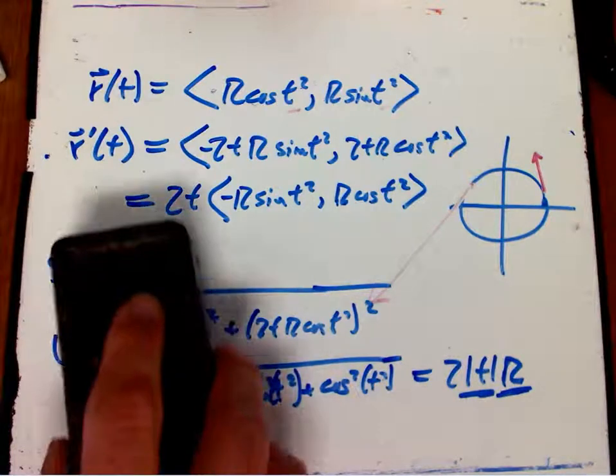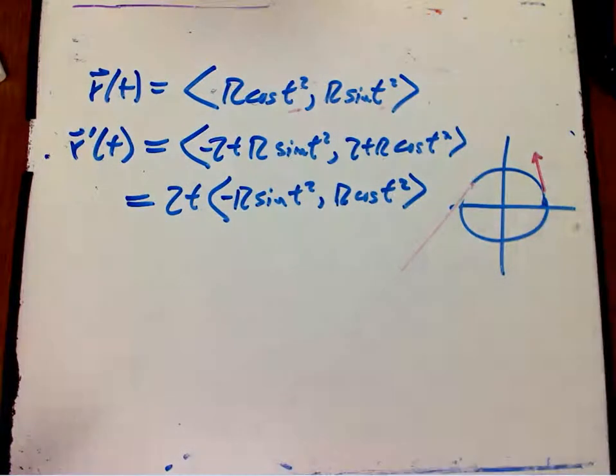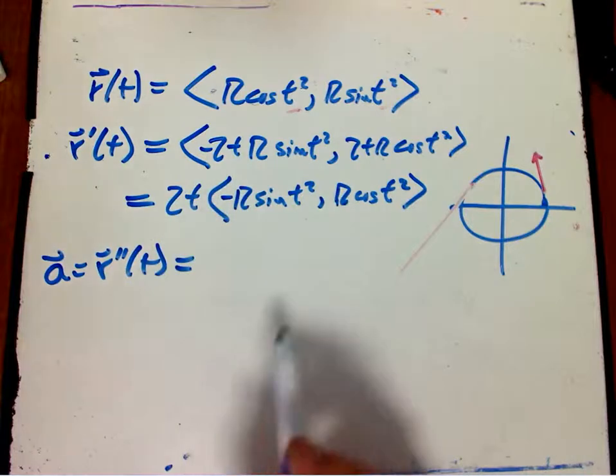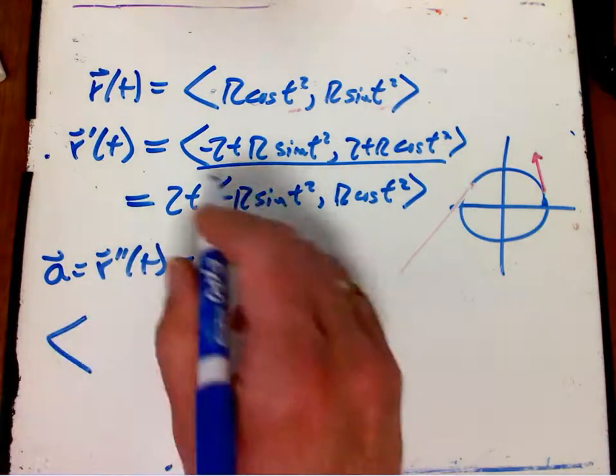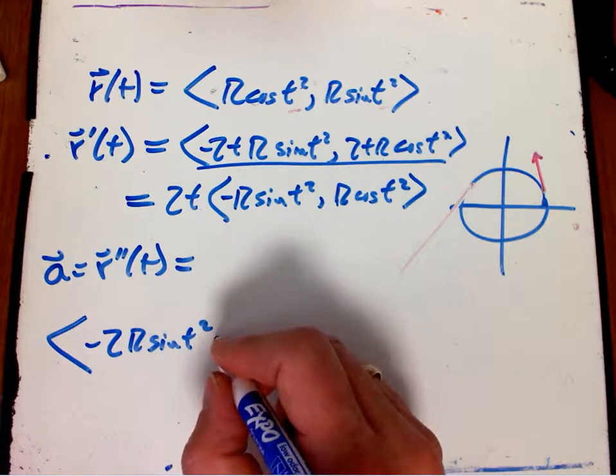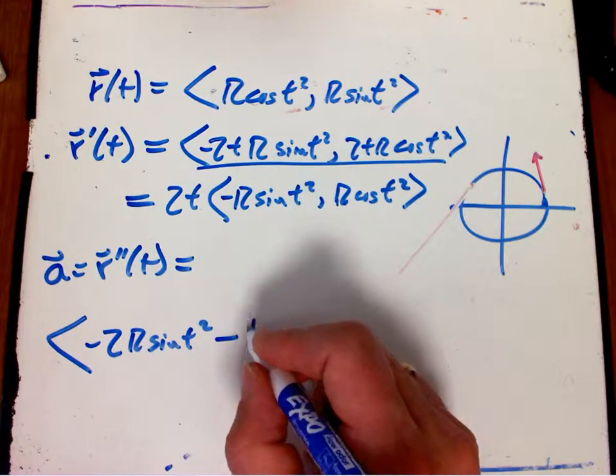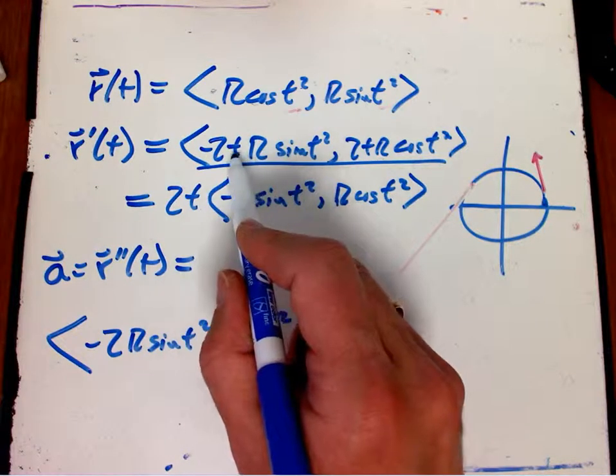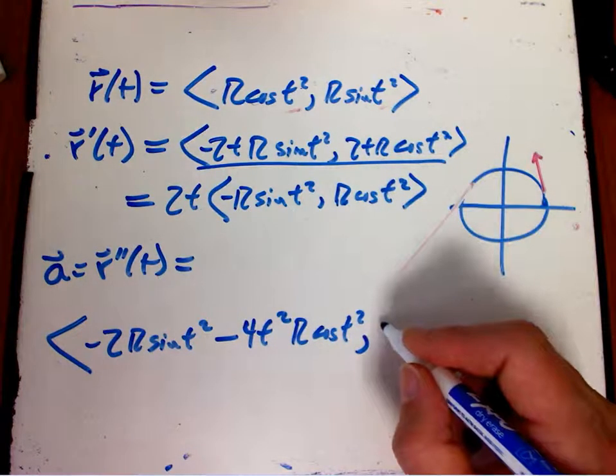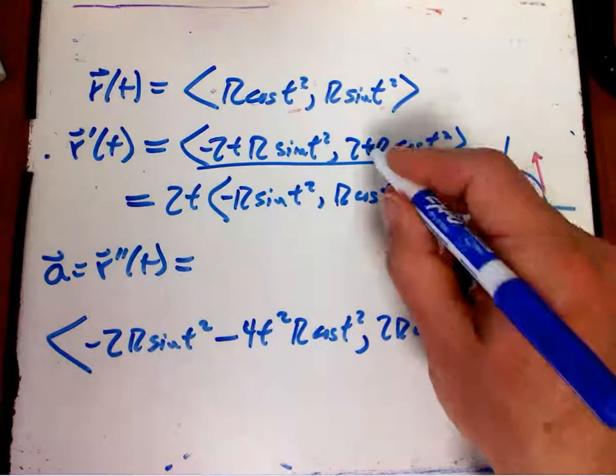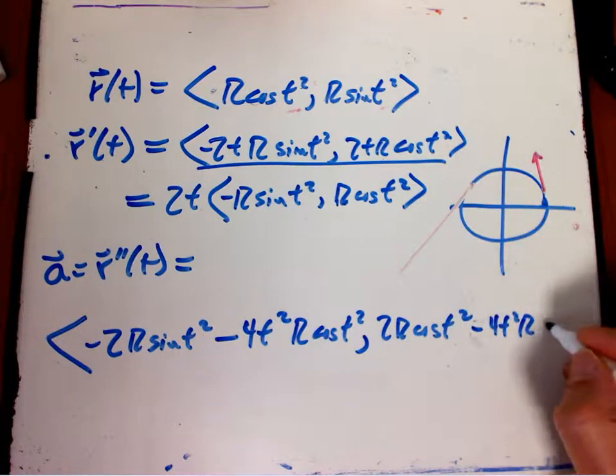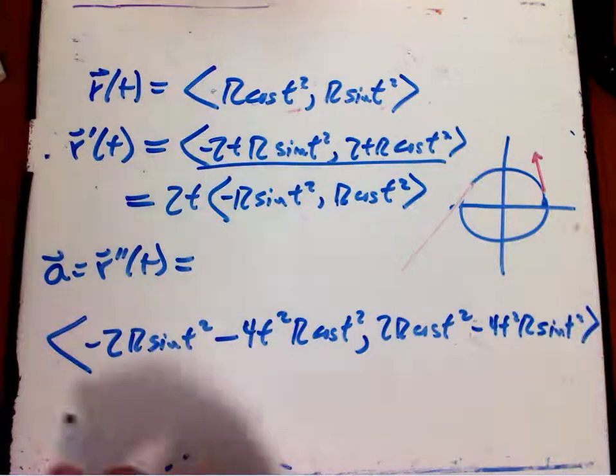A really interesting thing is what happens with the acceleration. The acceleration here, r double prime of t. I'm going to get a little product rule action. I'm going to get minus 2 r sine t squared. And then minus 4 t squared from the minus 2 t left alone and a new chain rule factor, r cosine t squared. Similar thing over here. 2 r cosine t squared from differentiating the t. And then plus 4 t squared, r minus, because now I'm differentiating the cosine.